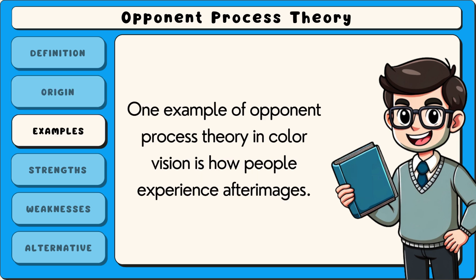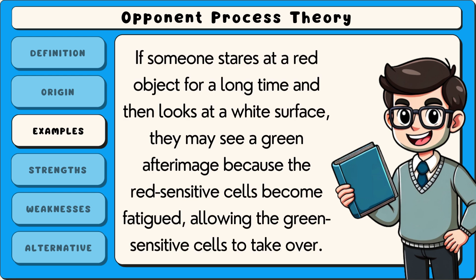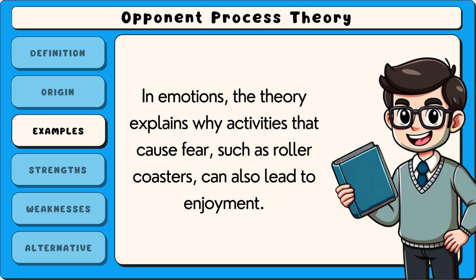One example of opponent process theory in colour vision is how people experience afterimages. If someone stares at a red object for a long time and then looks at a white surface, they may see a green afterimage because the red-sensitive cells become fatigued, allowing the green-sensitive cells to take over.